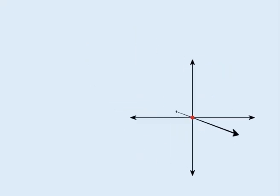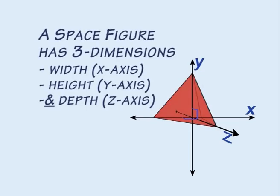Now imagine a third axis, or z-axis, perpendicular to the x and y-axis, coming out of the screen towards you and going away from you into the screen. This z-axis defines spatial depth of a three-dimensional object or space figure.